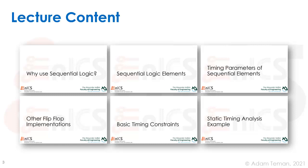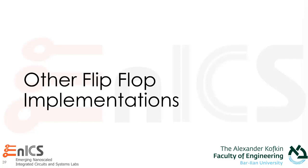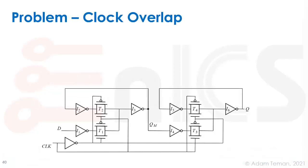We will now transition into the fourth part of our lecture, which goes over a few other flip-flop implementations just to show you how they are built and what they can solve. As a problem that we didn't discuss, there's the problem of clock overlap. This is our multiplexer-based flip-flop and we see that there's this inverter on the clock path, because we need both clock phases in order to open up and close the transmission gates.